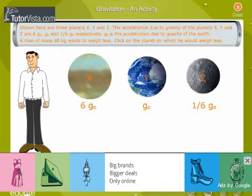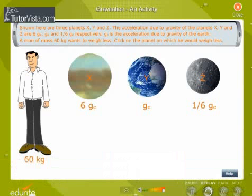Shown here are three planets X, Y and Z. The acceleration due to gravity of the planets X, Y and Z are 6 GE, GE and 1 by 6 GE respectively. GE is the acceleration due to gravity of the Earth. A man of mass 60 kg wants to weigh less. Click on the planet on which he would weigh less.